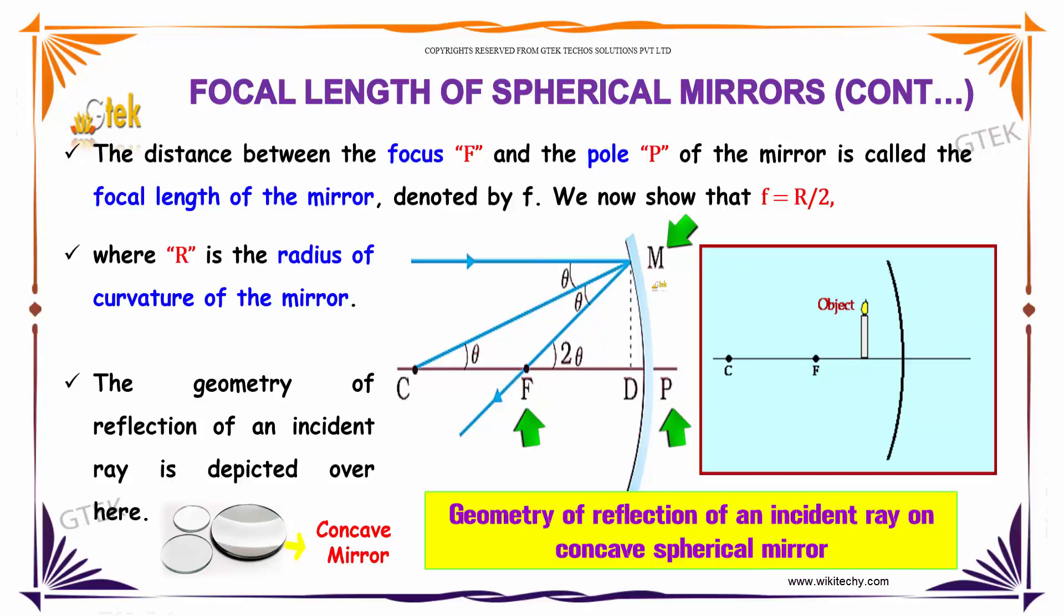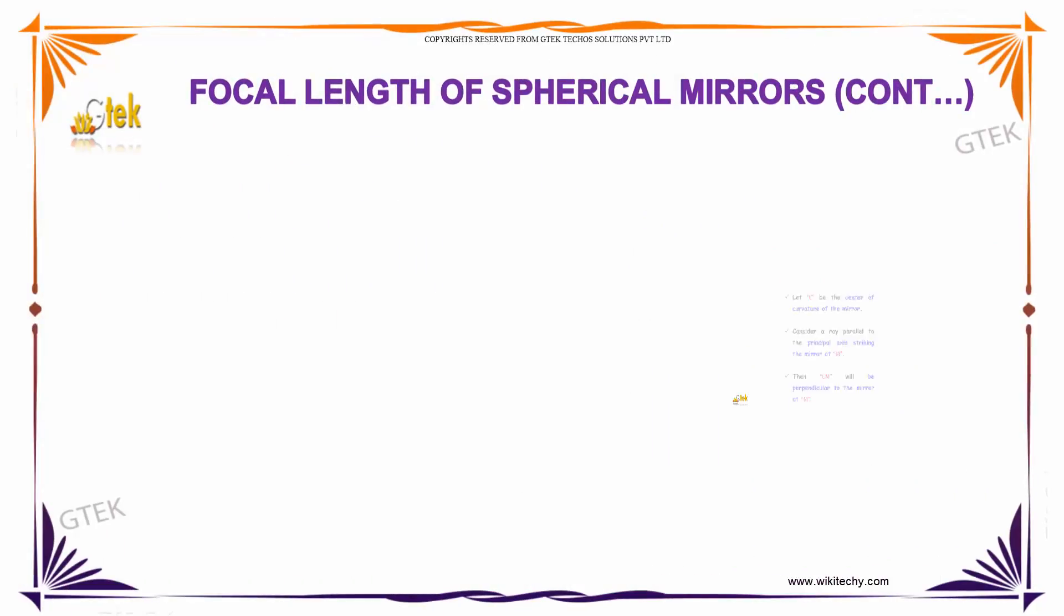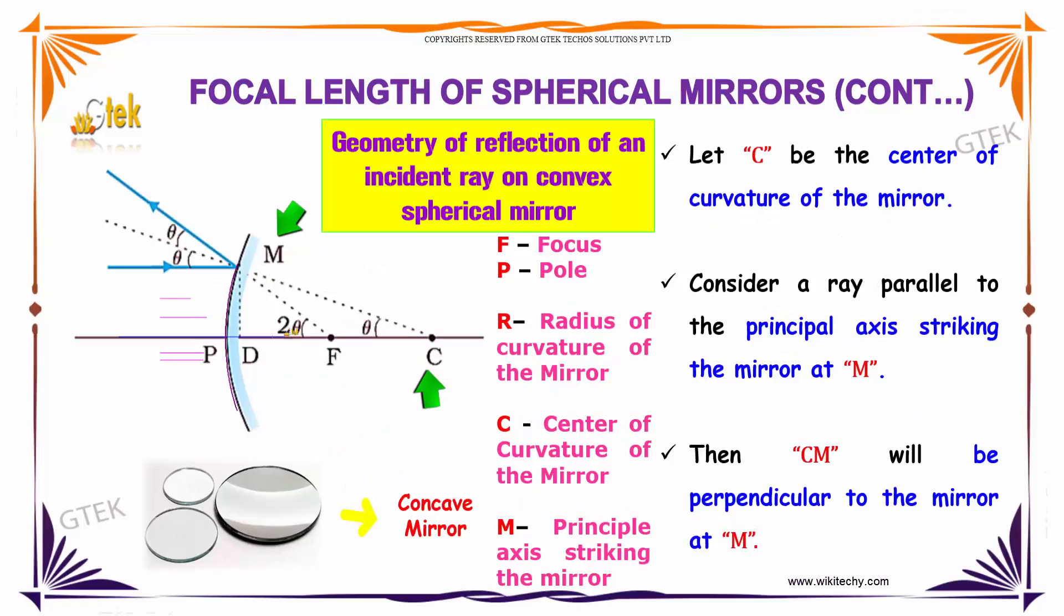The geometry of reflection of an incident ray is depicted here. Let C be the center of curvature of the mirror. Consider a ray parallel to the principal axis striking the mirror at M.